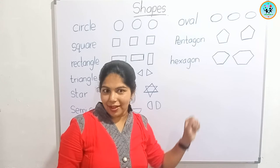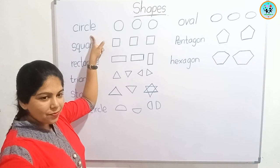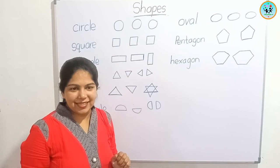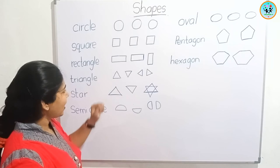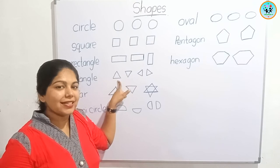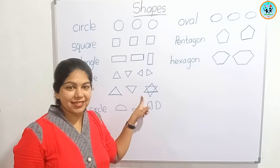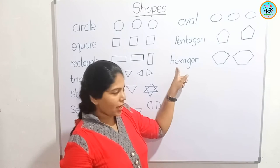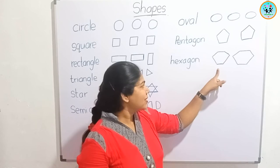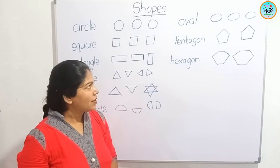Now I am going to ask some questions. What is this shape? It's a circle. What is this shape? It is a triangle. What is this shape? It's a star. What is this shape? It's a hexagon.